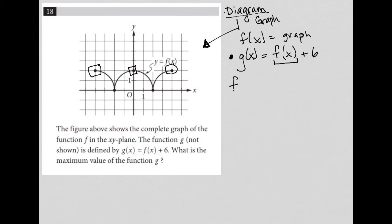So f(x) equals 2, that's the f(x) max, I'll call it. So I'm going to say g(x) max is equal to f(x) max plus 6.